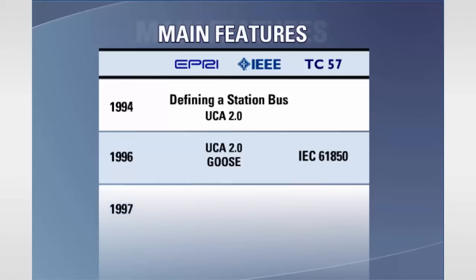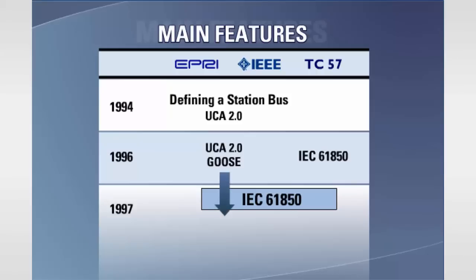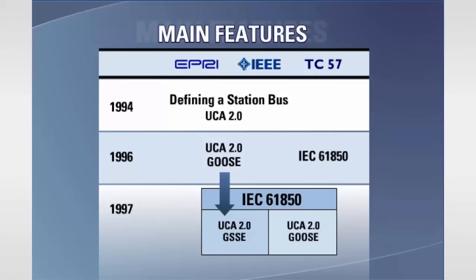In 1997, the UCA Committee and Technical Committee 57 agreed to work together to define a common international standard, which resulted in the current IEC 61850 specification. Within this new specification, the UCA 2.0 GOOSE was renamed Generic Substation State Event or GSSE and an enhanced GOOSE was specified. The IEC 61850 peer-to-peer service is the UCA 2.0 GOOSE with enhanced functionality. The IEC 61850 station bus also specifies a client server model which we'll look at later in the course.